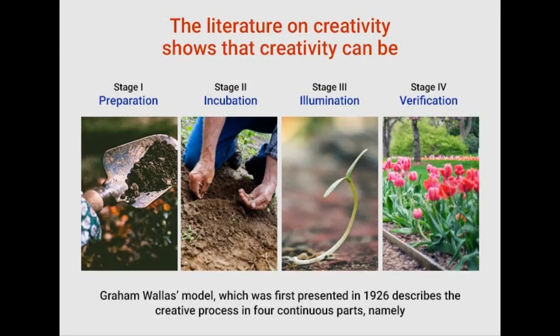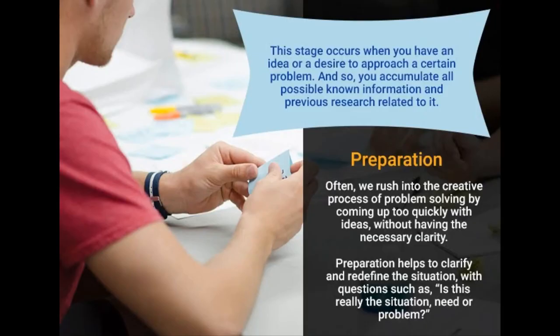Graham Wallace's model, which was first presented in 1926, describes the creative process in four continuous parts, namely: Preparation, Incubation, Illumination, and Verification.